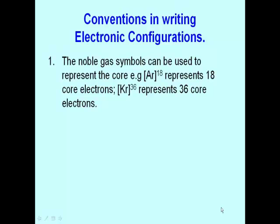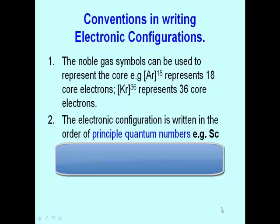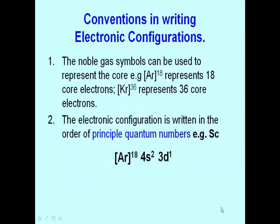So in summary, for any transition element, the noble gas symbol can be used to represent the core electrons. Another point to note is that the electronic configuration is written in the order of principal quantum numbers. Let us look at our scandium example again. We had written it like this, as shown on the screen, because we filled the 4s before filling the 3d orbitals. Now the correct convention is that the orbital with a higher quantum number should go last. So the correct way to write it is shown here.